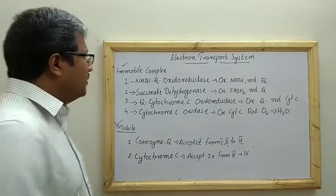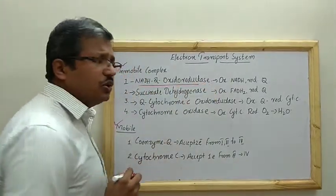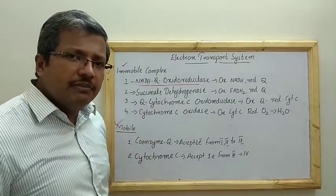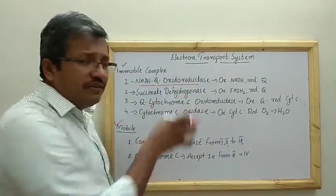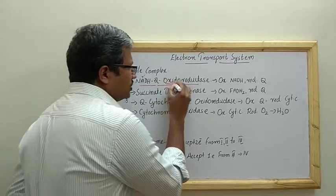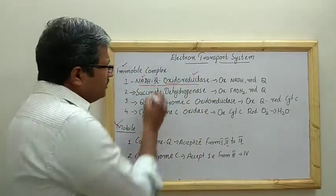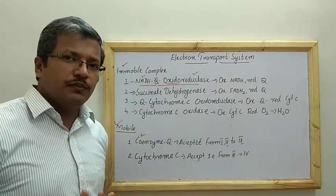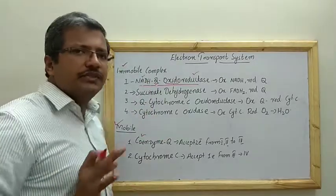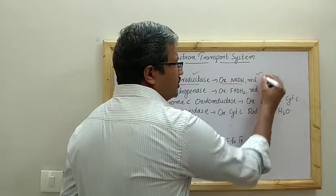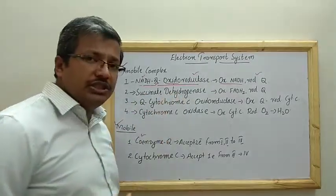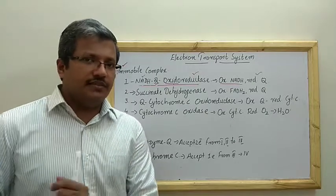The first complex is NADH:Q oxidoreductase. From the name itself we can predict its function: NADH undergoes oxidation and coenzyme Q — ubiquinone — undergoes reduction. So complex one oxidizes NADH and reduces coenzyme Q.